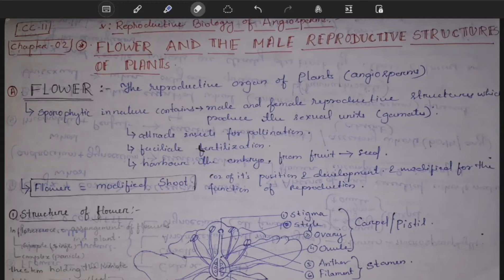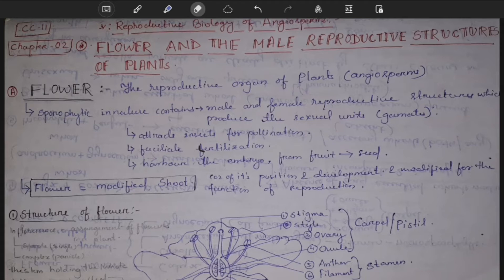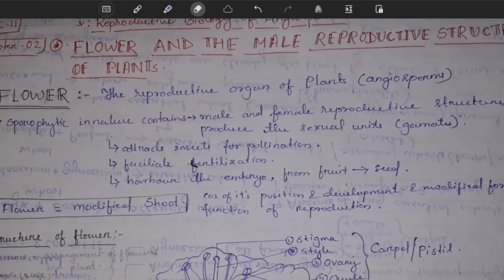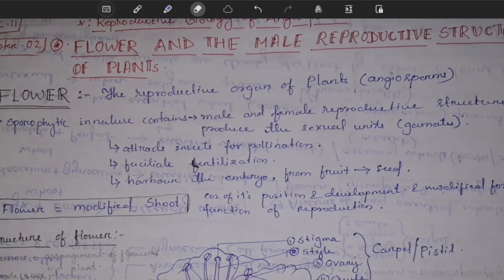Reproductive biology of angiosperms: the sexual reproductive process in angiosperms is carried out through special reproductive organs. The special reproductive organ of angiosperms is called the flower. We will study the structure and functions of the flower.